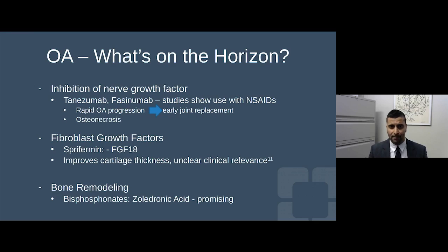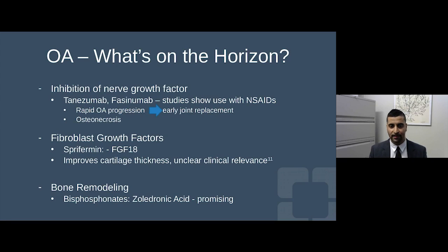I hope during my career to see transformation in osteoarthritis therapies. We are studying medications targeting nerve-related pain: inhibition of nerve growth factor — tanezumab and facinemab — which have shown positive studies on pain response. However, studies with concomitant use with NSAIDs showed an increased risk for rapid osteoarthritis progression and osteonecrosis, so these have not yet received FDA approval. Other drugs targeting fibroblast growth factors and biomechanical mechanisms of joint repair aim to improve cartilage thickness, but no clear evidence of benefit yet.